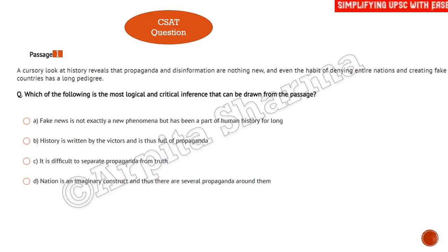Today I'm going to give two CSAT-based mock test questions. The first question: a passage is given — 'A cursory look at history reveals that propaganda and disinformation are nothing new, and even the habit of denying entire nations and creating fake countries has a long pedigree.' Which of the following is the most logical and critical inference that can be drawn from the passage? Go through the four options and tell me in the comment section which you think is the right answer.